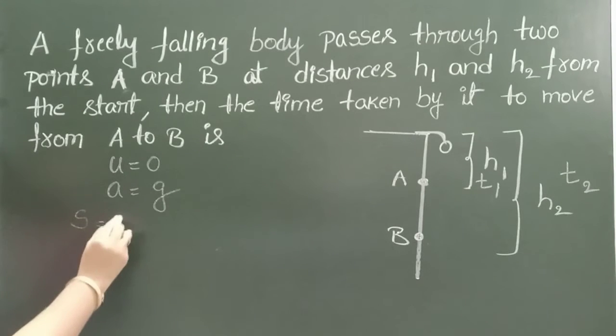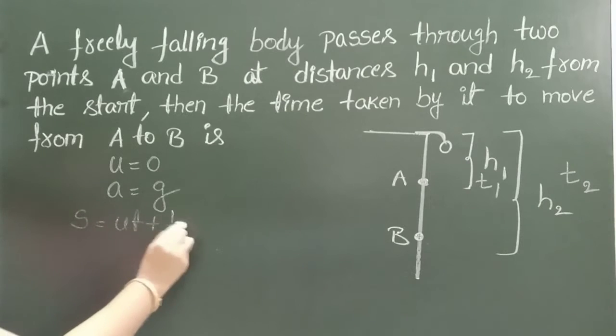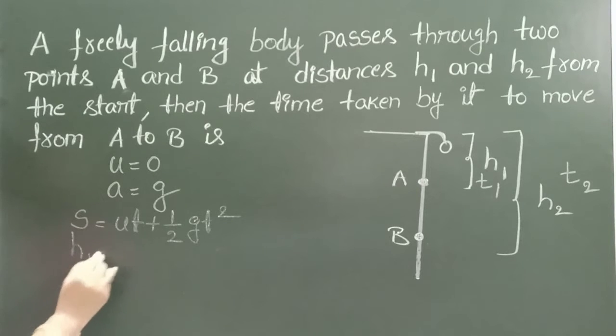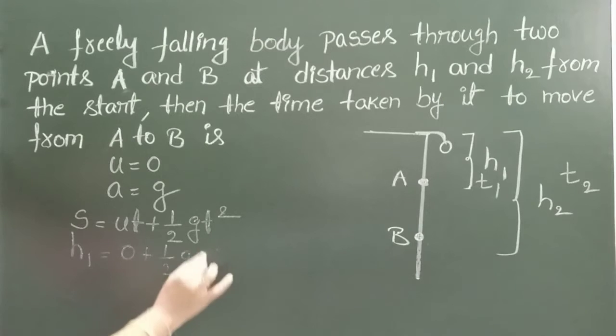S equals ut plus half gt squared. In place of S, height H1. Initial velocity is 0 plus half g T1 squared.